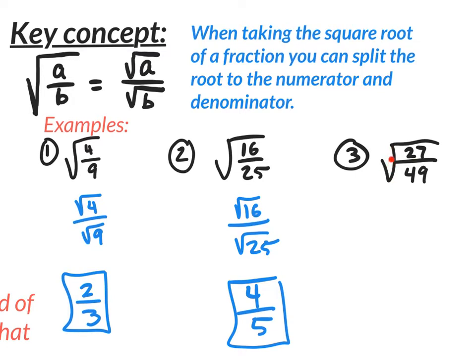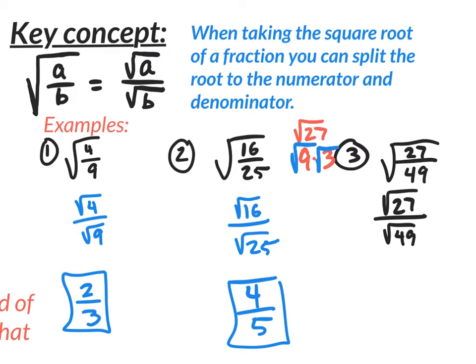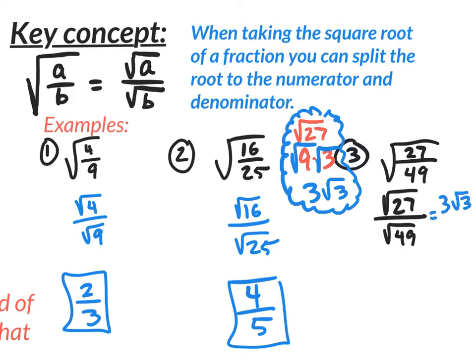We have the square root of a fraction. You've got to take this root and split it — put the square root on the 27 and the square root on the 49. Now, this one's not that easy because 27 is not a perfect square number. 49 is a perfect square number, so the bottom is easy, but the top requires more work. The square root of 27 breaks down to 9 times 3. Split the root and you'll get 3 square root of 3. So the square root of 27 is rewritten as 3 square root of 3. My answer is 3 square root of 3 over — and the square root of 49 is 7. Done.